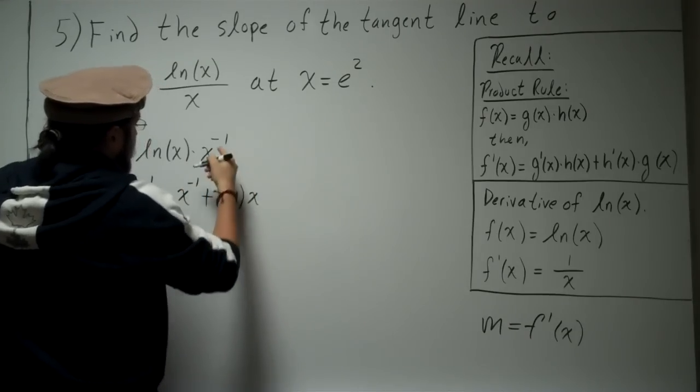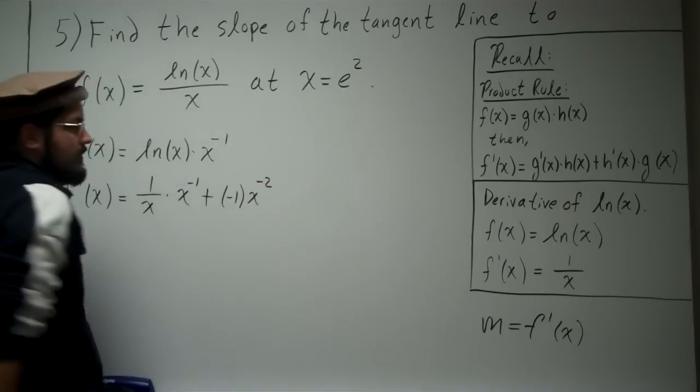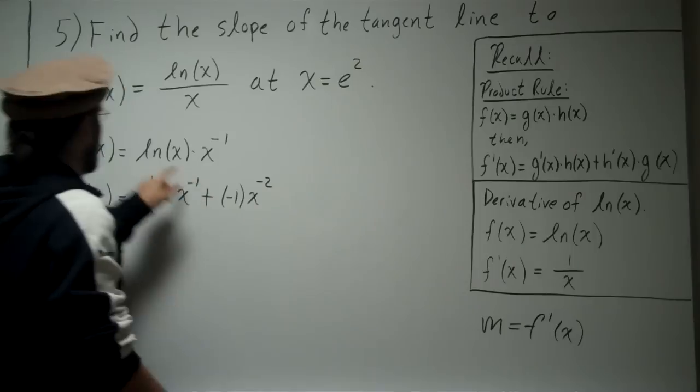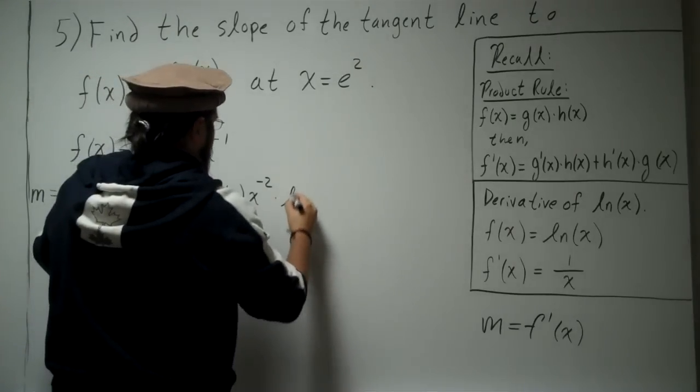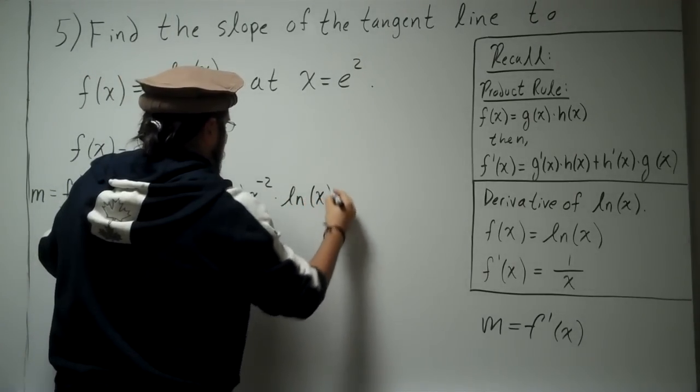times x, negative one, minus one, negative two, times g, so just times ln(x).